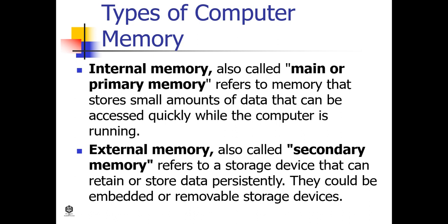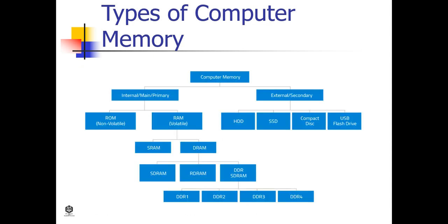External memory, also called secondary memory, refers to a storage device that can retain or store data persistently. They could be embedded or removable storage devices. Examples include hard disk or solid state drives, USB flash drives, and compact disks. There are basically two kinds of internal memory: ROM and RAM.